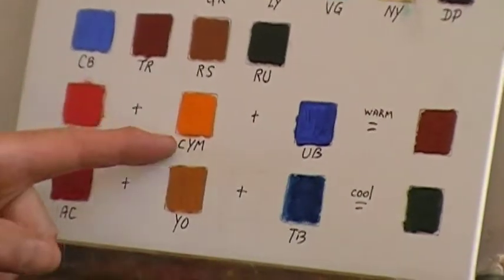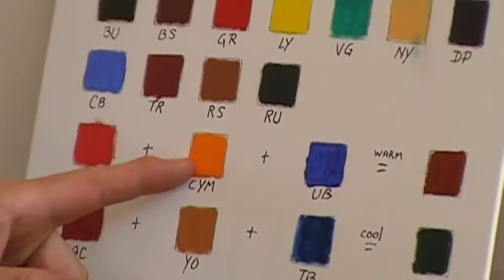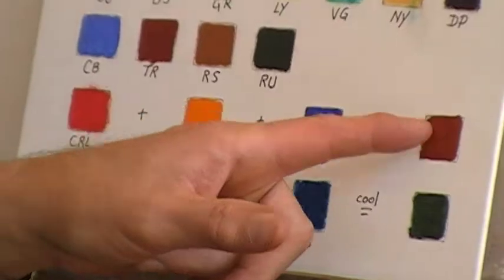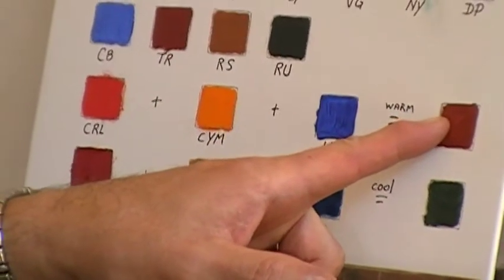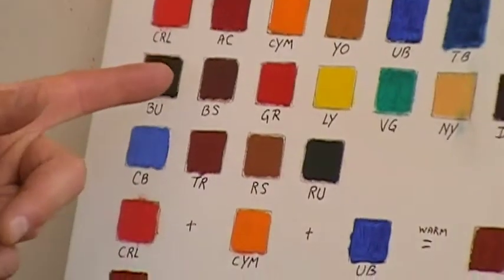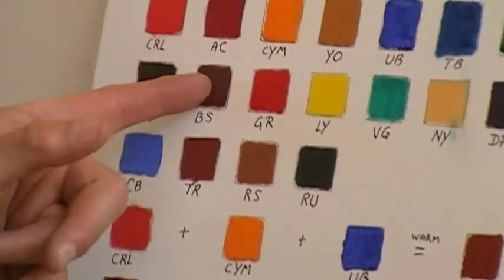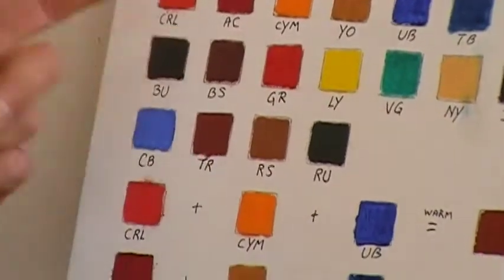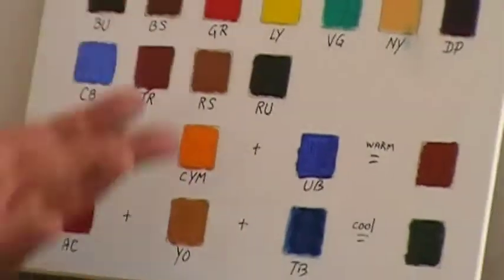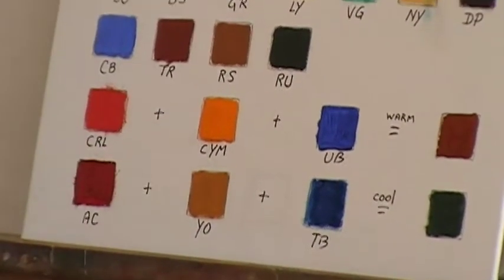But I've used two cadmium colors which are expensive to make a very cheap brown color which I could have bought by using a little bit of tiara rose and burnt sienna. So the point is it's actually cheaper just to buy the earth tones.